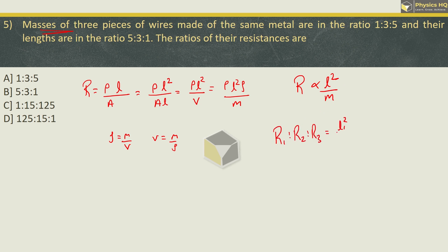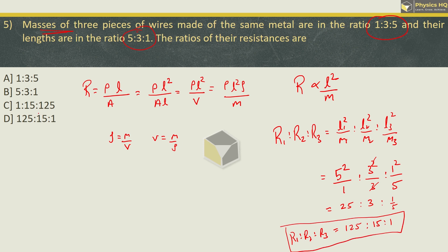So when we take the ratios of these three resistances, we will have L1 square upon M1, L2 square upon M2, L3 square upon M3. L1 is 5, so we will take it as 5 square upon 1. This will be 3 square upon 3. And 1 square upon 5. So this is 25:3:1/5, which gives us 125:15:1. The correct option is option C, 125:15:1.